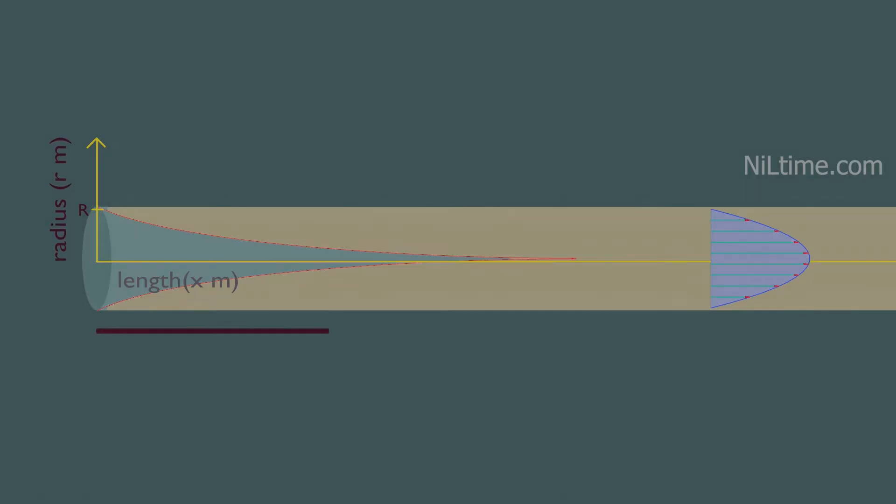The region from the pipe inlet to the point at which the velocity profile is fully developed is called the hydrodynamic entrance region, and the length of this region is called the hydrodynamic entry length.